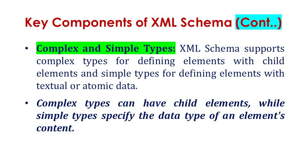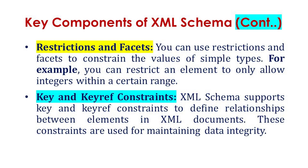Complex types can have child elements while simple types specify the data type of an element's content. Next are restrictions and facets: you can use these to constrain the values of simple types — for example, restricting an element to only allow integers within a certain range. Key and key-ref constraints in XML Schema support defining relationships between elements in XML documents, and are used for maintaining data integrity.